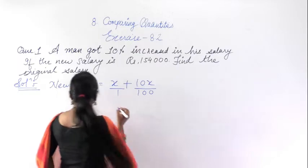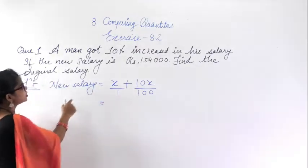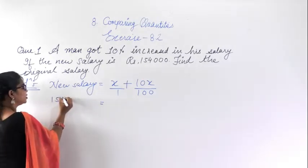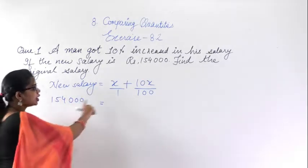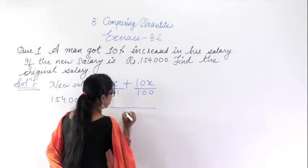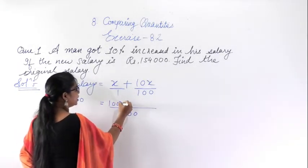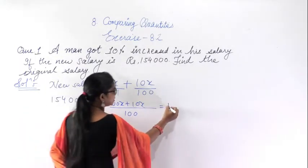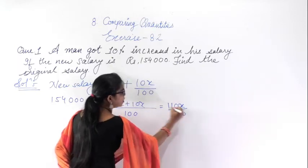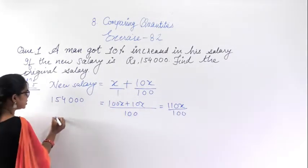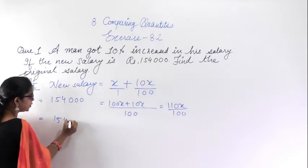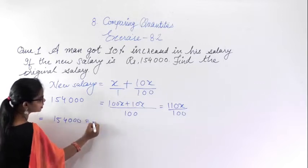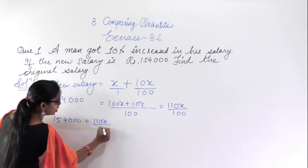On solving this, the new salary equals X plus 10X upon 100, which gives 110X upon 100. Taking LCM, 100X plus 10X is 110X upon 100. So we write 1,54,000 equals 110X upon 100.